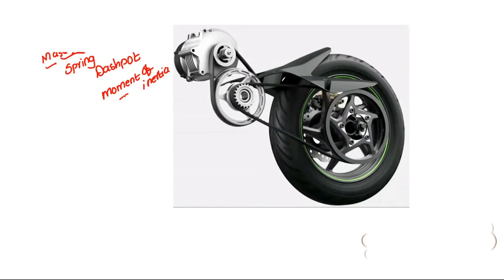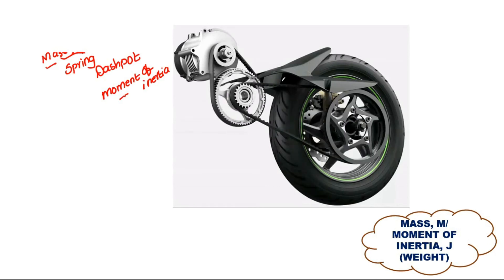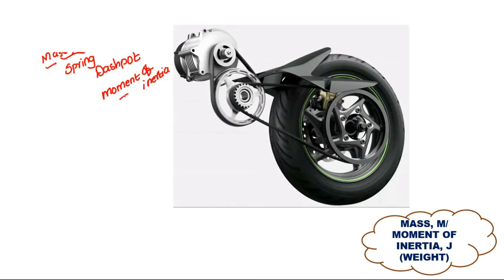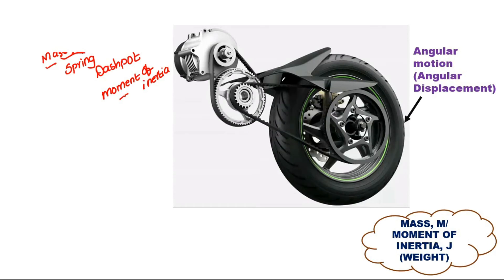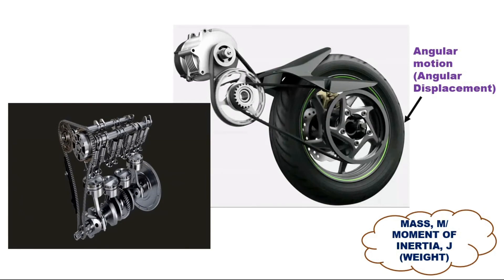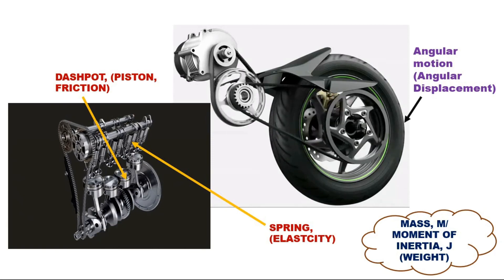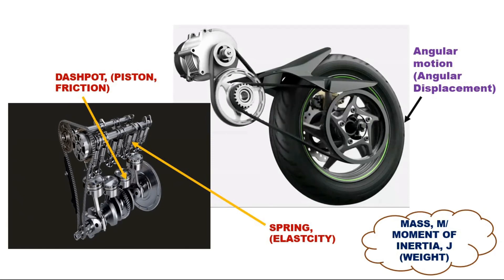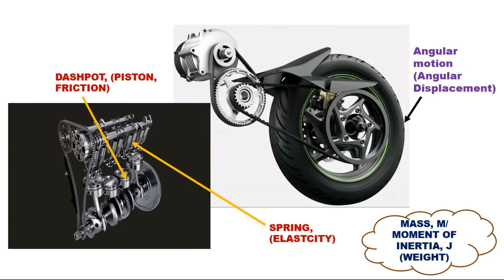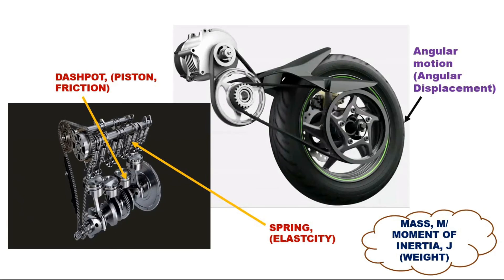Consider the motion of a tire in a bike: mass and moment of inertia define the overall weight of the system. The angular displacement or angular rotation represents angular motion. In cars and bikes, the piston arrangement moves with the help of a setup, and the suspension spring supports it. The piston is called the dashpot, which is responsible for friction, and the suspension spring is the spring, which is responsible for elasticity.